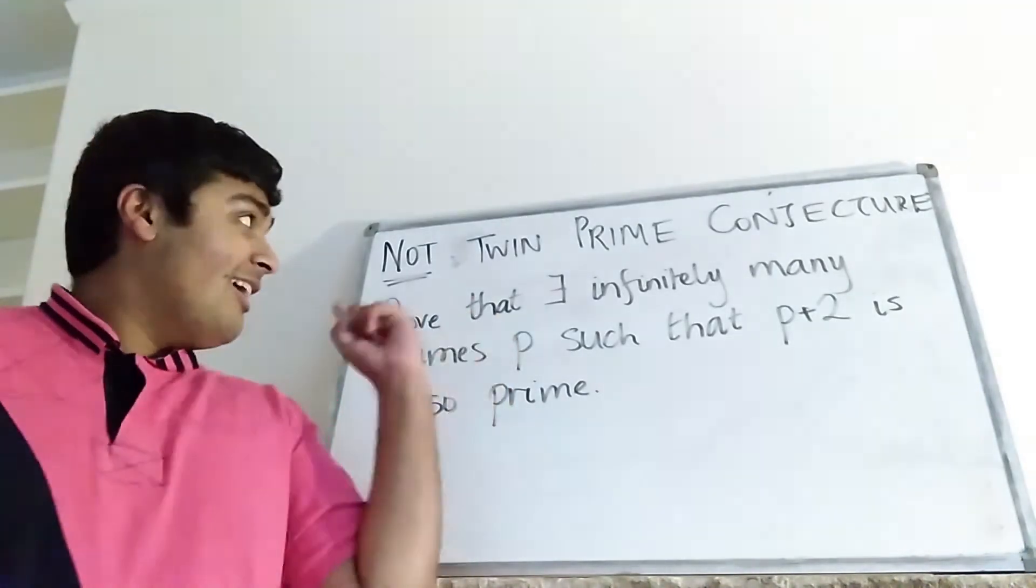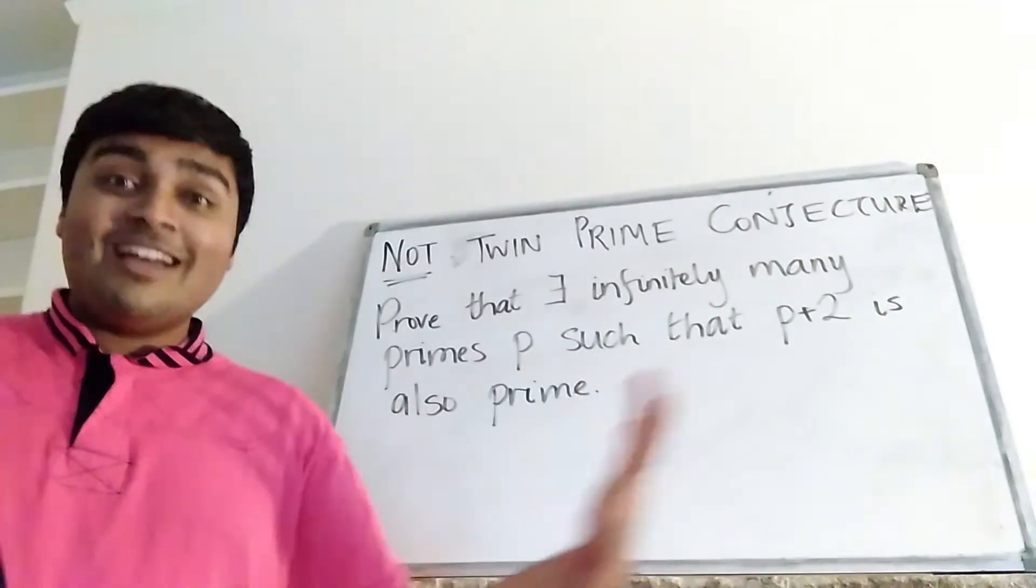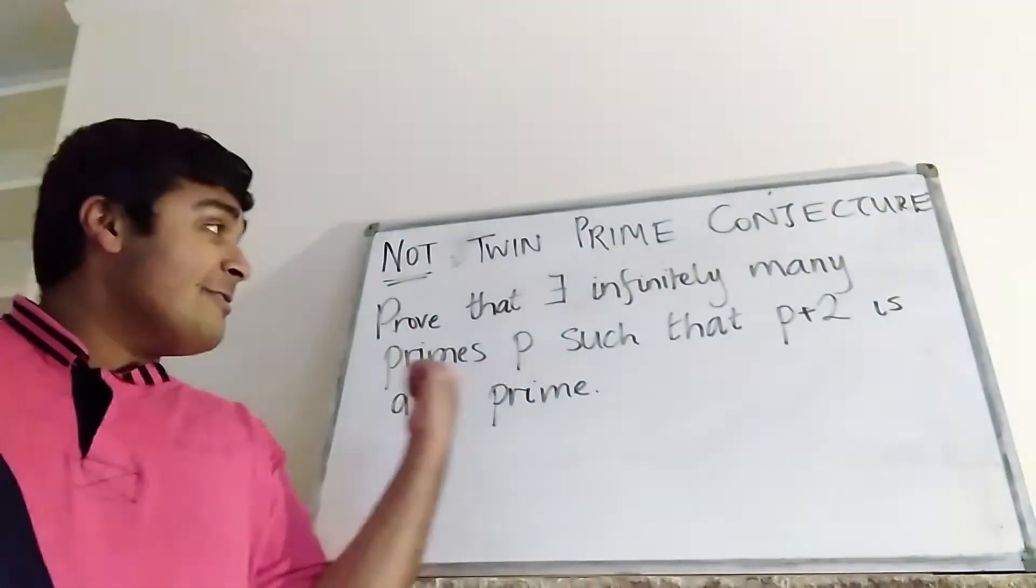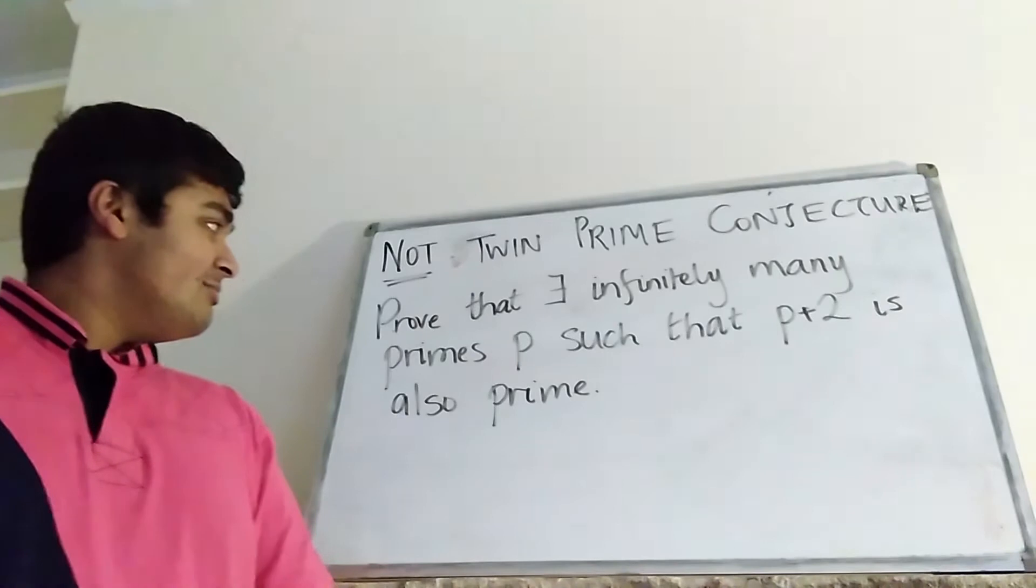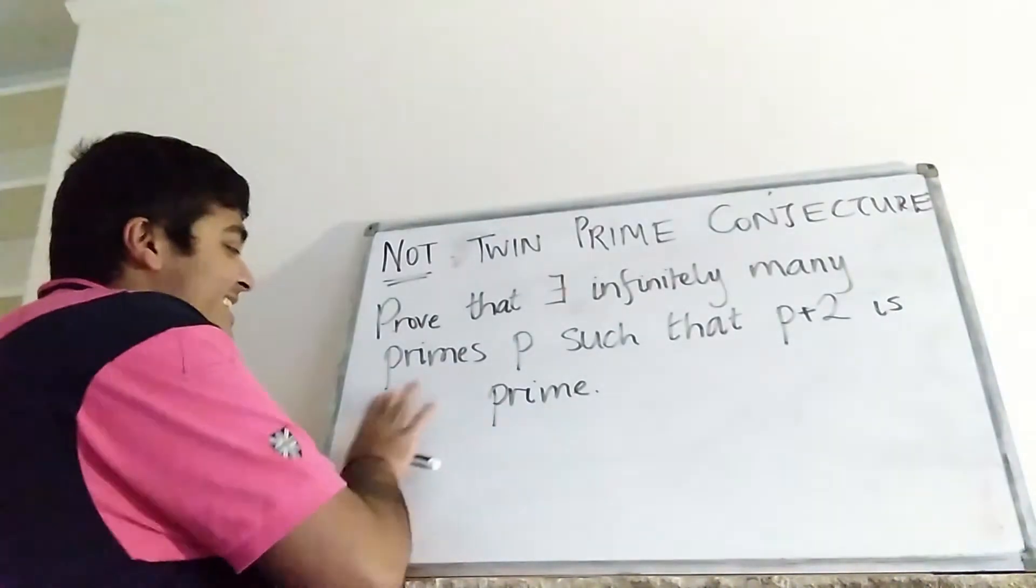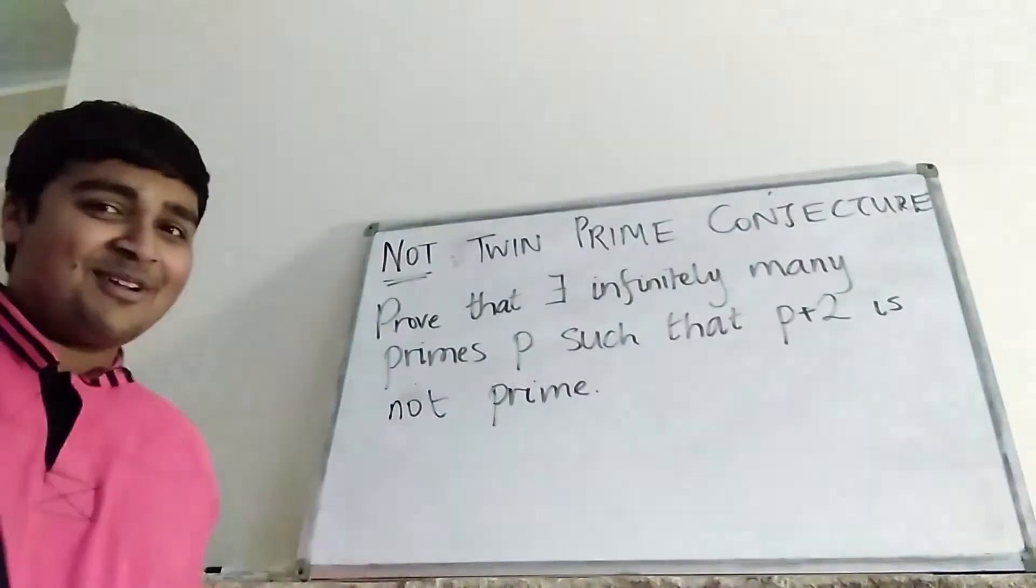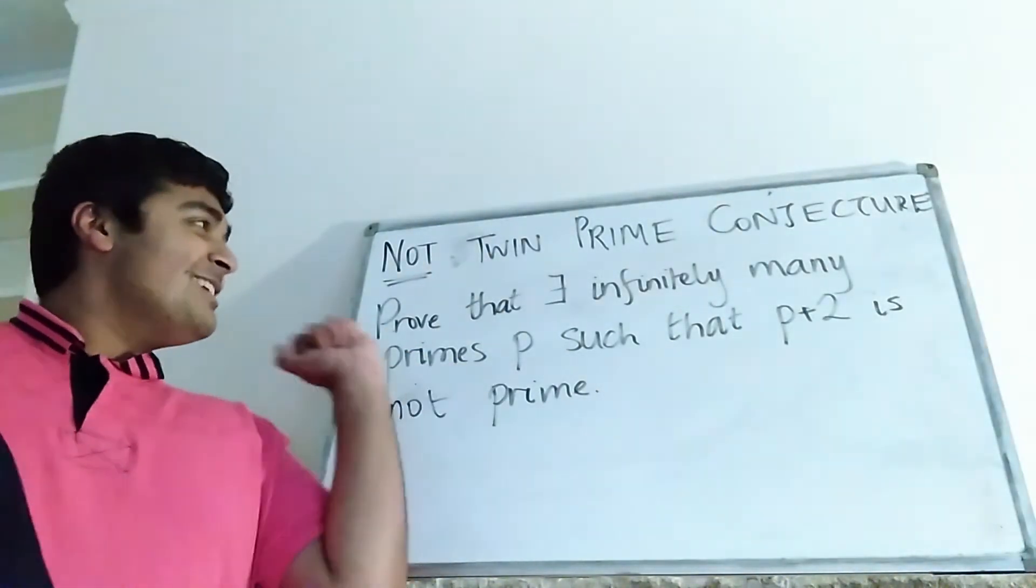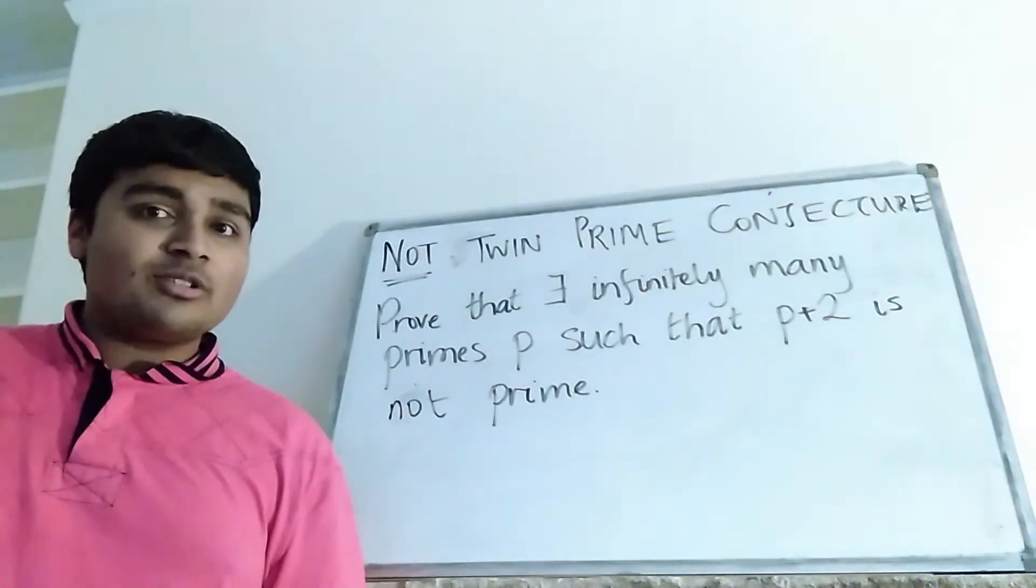Anyway, today I'm going to be doing the not-twin-prime conjecture, which I can solve, and I'm going to solve this video. Okay, we want to prove that there are infinitely many primes p, such that p plus 2 is not also prime, is not prime. That's why it's called the not-prime conjecture. So let me just read that again. Prove that there exist infinitely many primes p, such that p plus 2 is not prime.